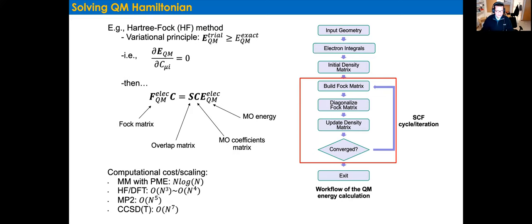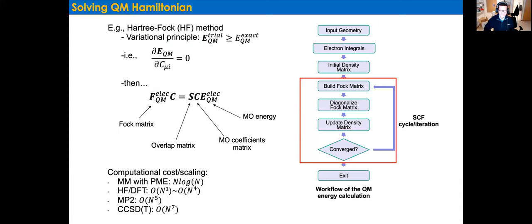Regarding computational cost: classical MM with particle mesh Ewald scales as N log N. Hartree-Fock or DFT scales as N³ or N⁴. Møller-Plesset is N⁵. Coupled cluster CCSD(T) scales as N⁷. This is the cost you expect as you increase the level of accuracy.